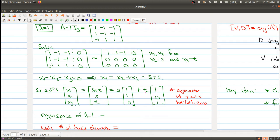Another way to think about what's happening is that the eigenspace is actually a span of two vectors. These two vectors are linearly independent.